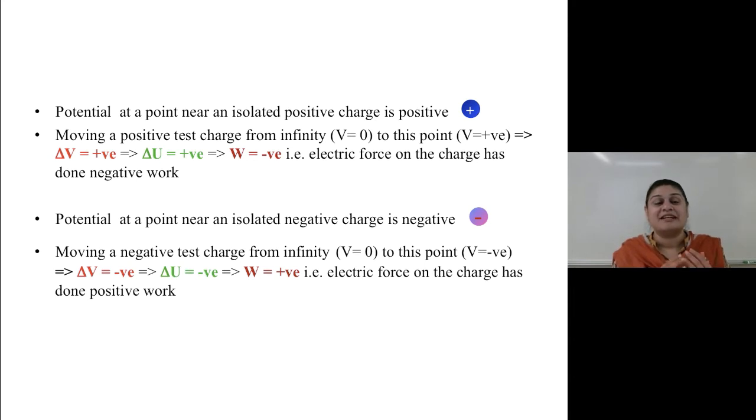The electrical force on the charge has done negative work on it to assemble the system. Potential at a point near an isolated negative charge is negative. Moving a negative charge from infinity to this point, delta V will be negative. So delta U will be negative. That means W, or work done, will be positive. That is, electrical force on the charge has done positive work. And trust me, if you keep the signs together, it all works out in your homeworks and in your quizzes.